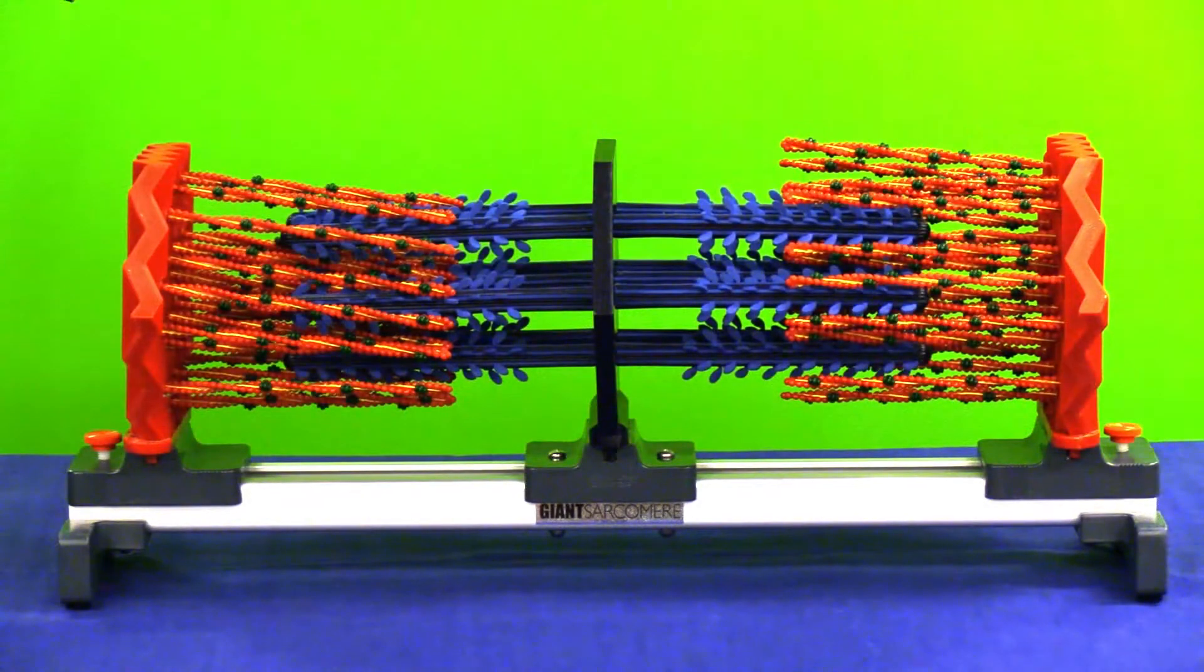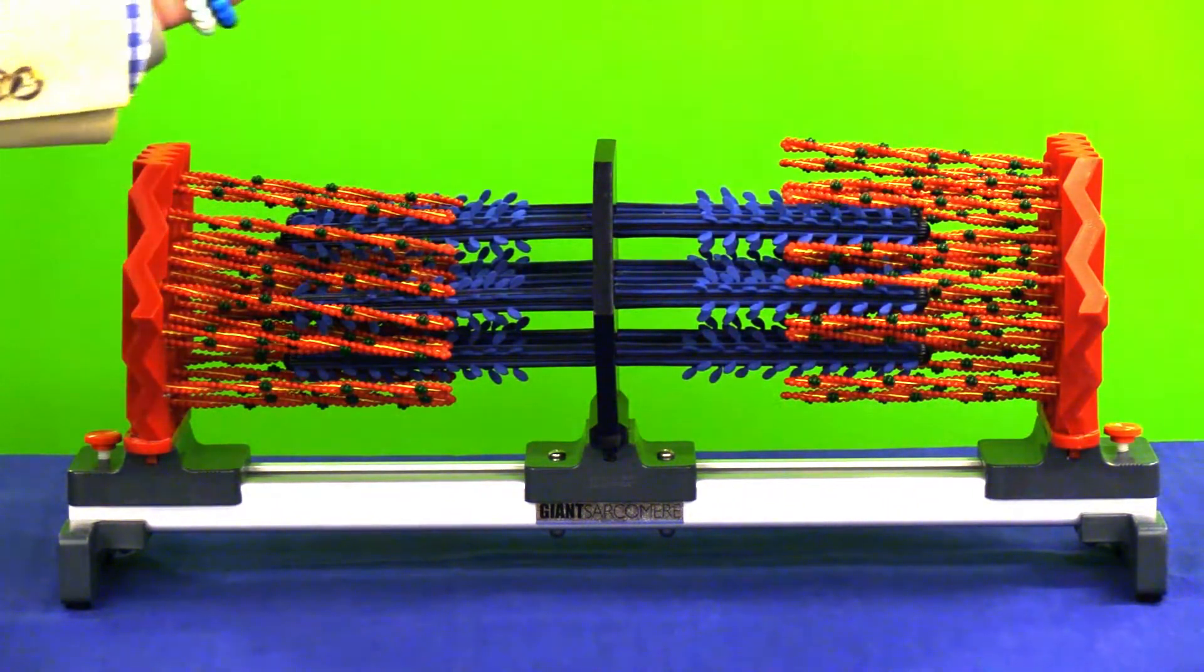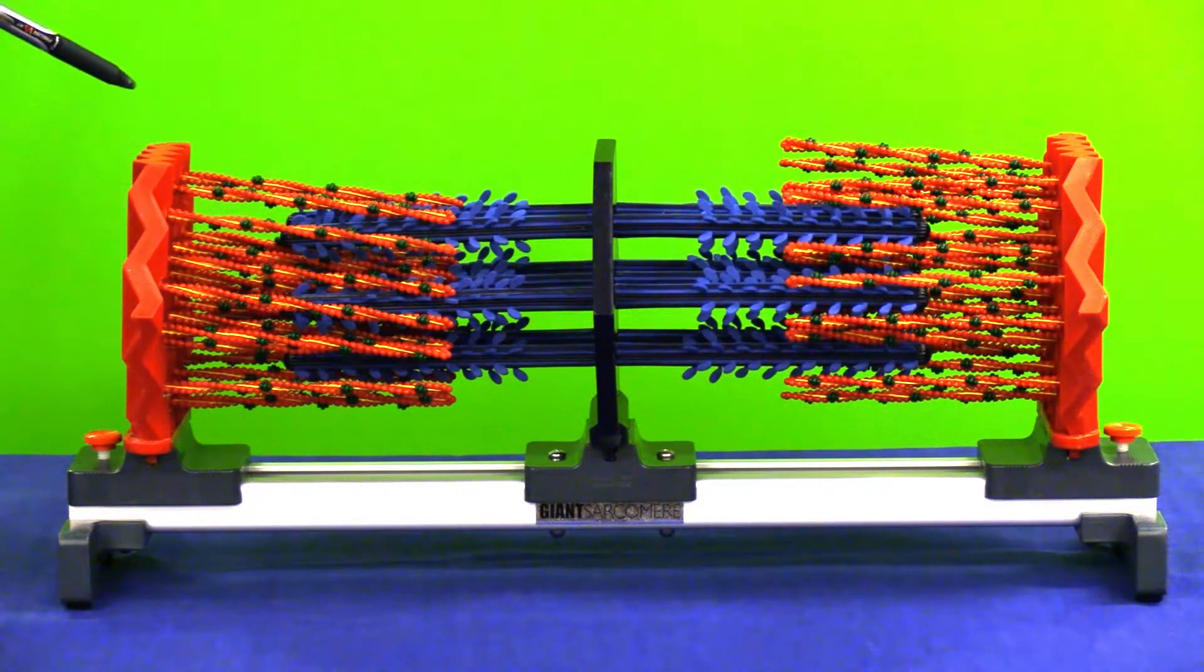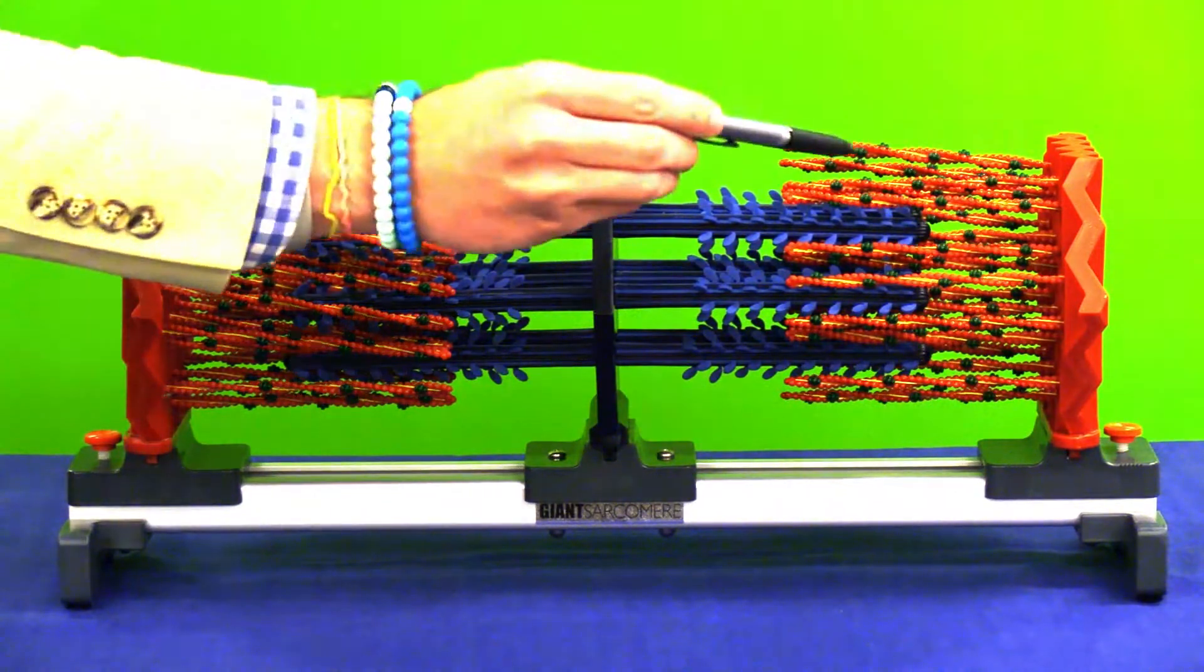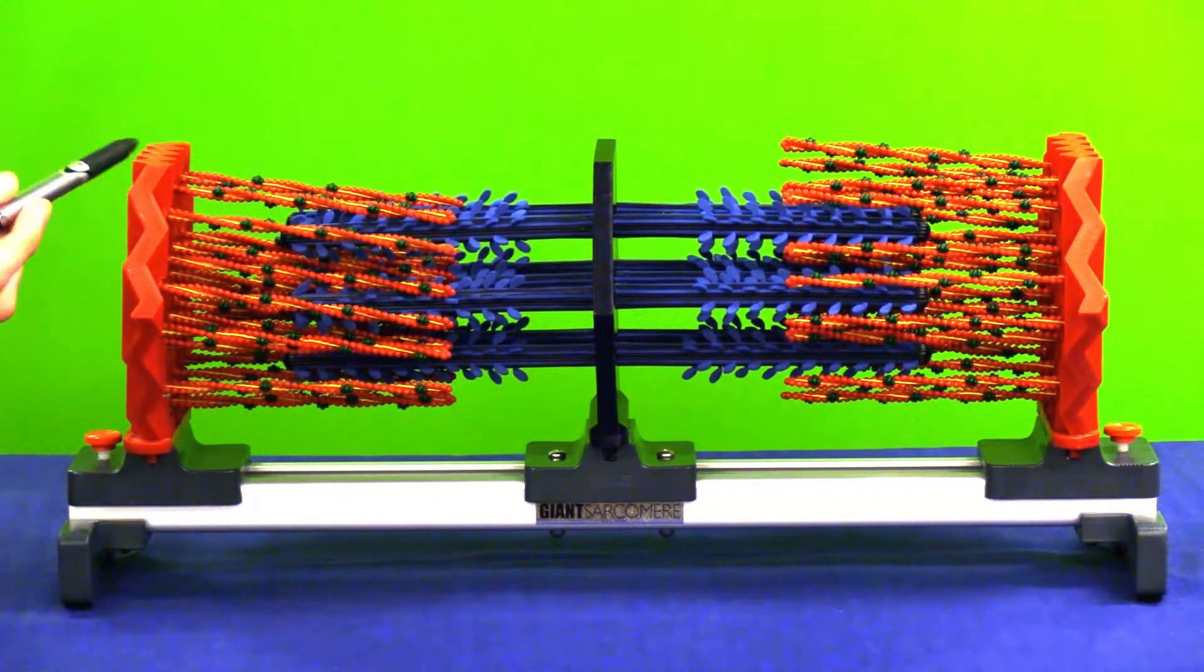In this video, we're going to go over a general overview and structure of the sarcomere. A sarcomere is the basic contractile unit of skeletal muscle found in one single muscle cell. What we're looking at here, from this red portion to this red portion, are called Z-lines, and the Z-line to Z-line represents one full sarcomere.